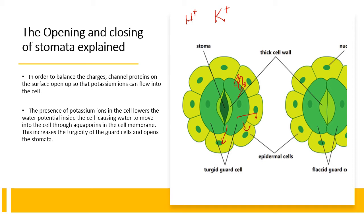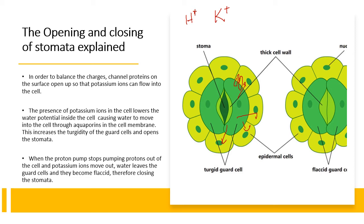When potassium ions flow into the guard cell, they result in a reduction of water potential — they make the inside more concentrated. As a result, water moves into the guard cells by osmosis, making the guard cells more turgid, and that opens the stomata. Once the proton pumps stop pumping protons out of the cell, the potassium ions will move out, water will leave the guard cells, the cells become flaccid, and therefore they close the stomata. So for the stomata to be open, the guard cells must be turgid, which requires the proton pumps and the influx of potassium.